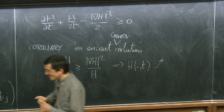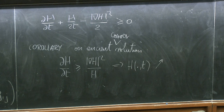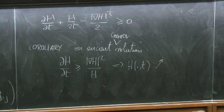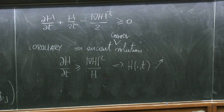This is proved by a maximum principle. If you have an eternal solution, you don't have this term, and you find some vector field where the expression becomes equal to zero. By the strong maximum principle, this propagates for all times and spaces, and this gives a rigidity which implies that the eternal solution is translating. This is the idea of Hamilton's proof of the result I gave you this morning.